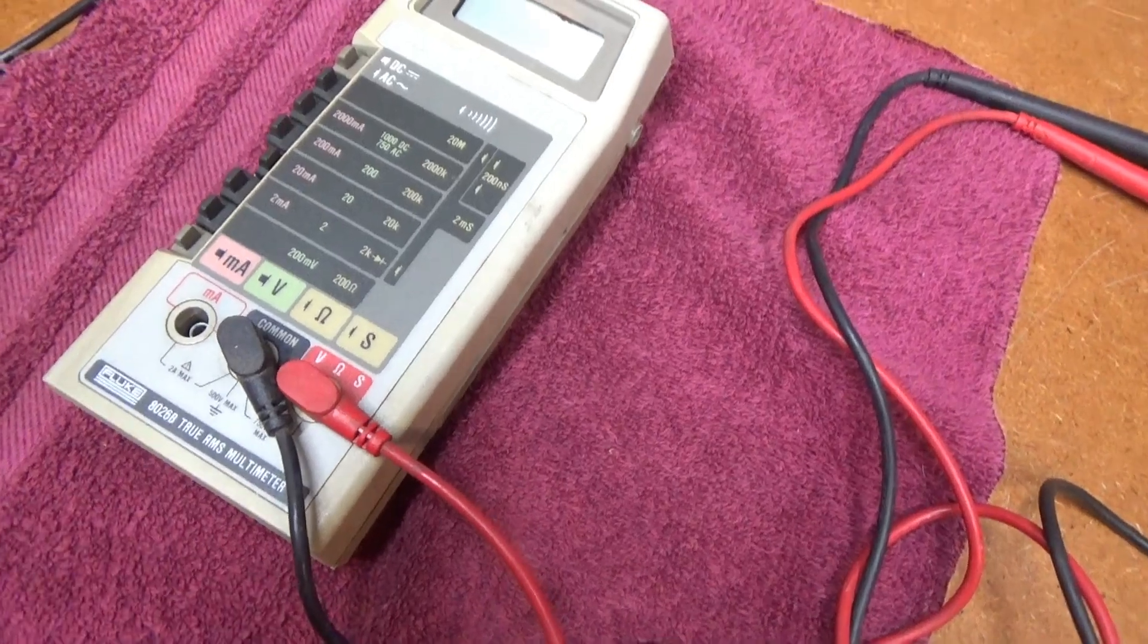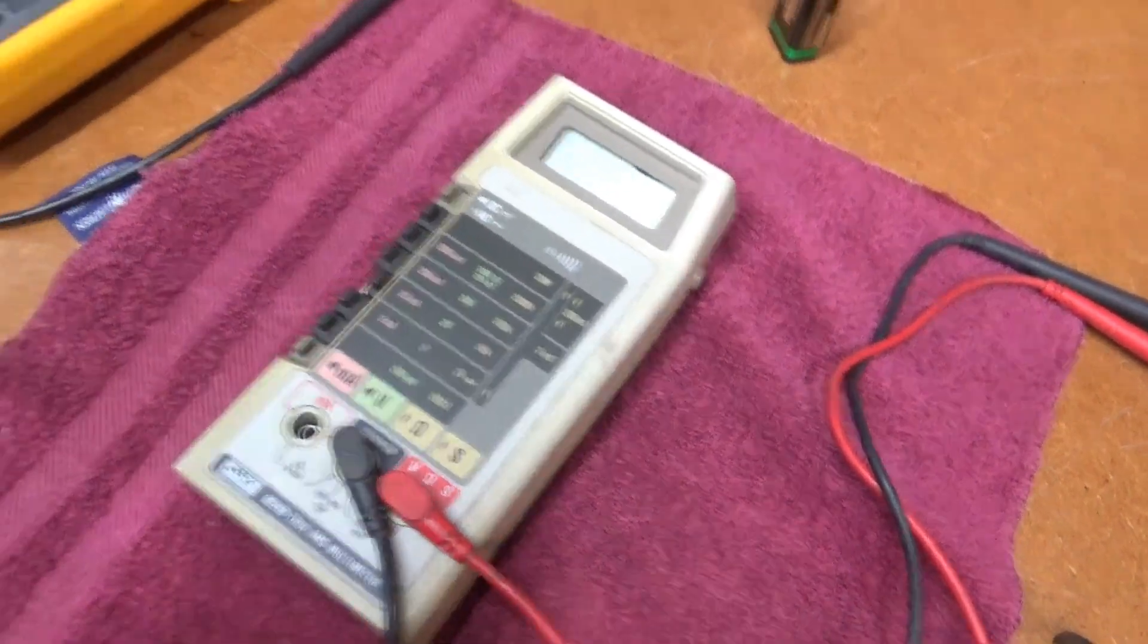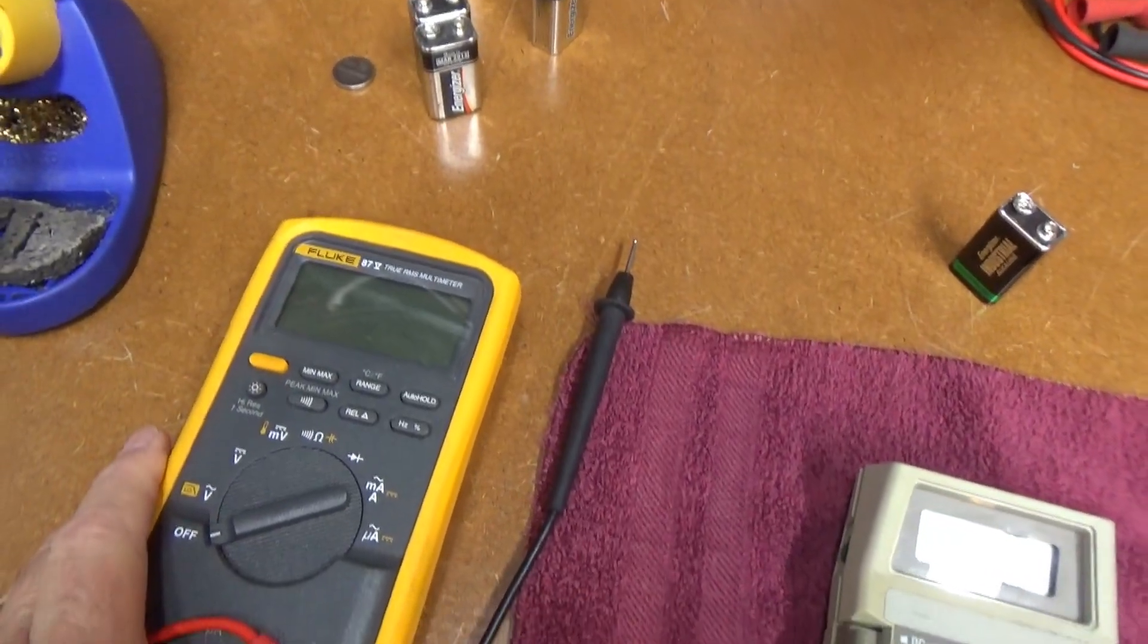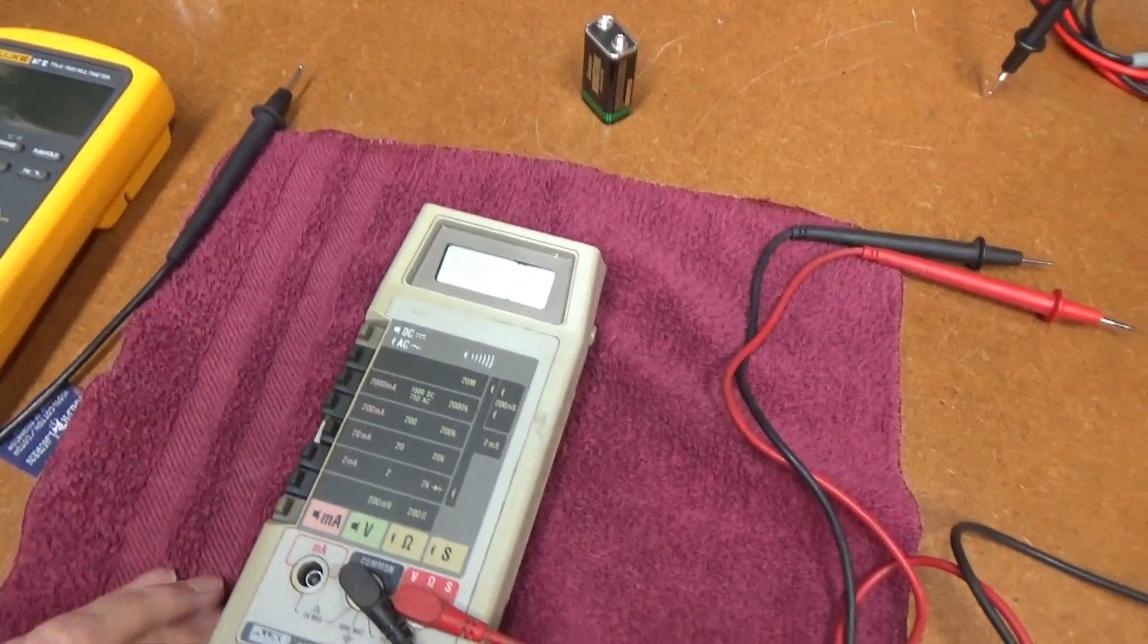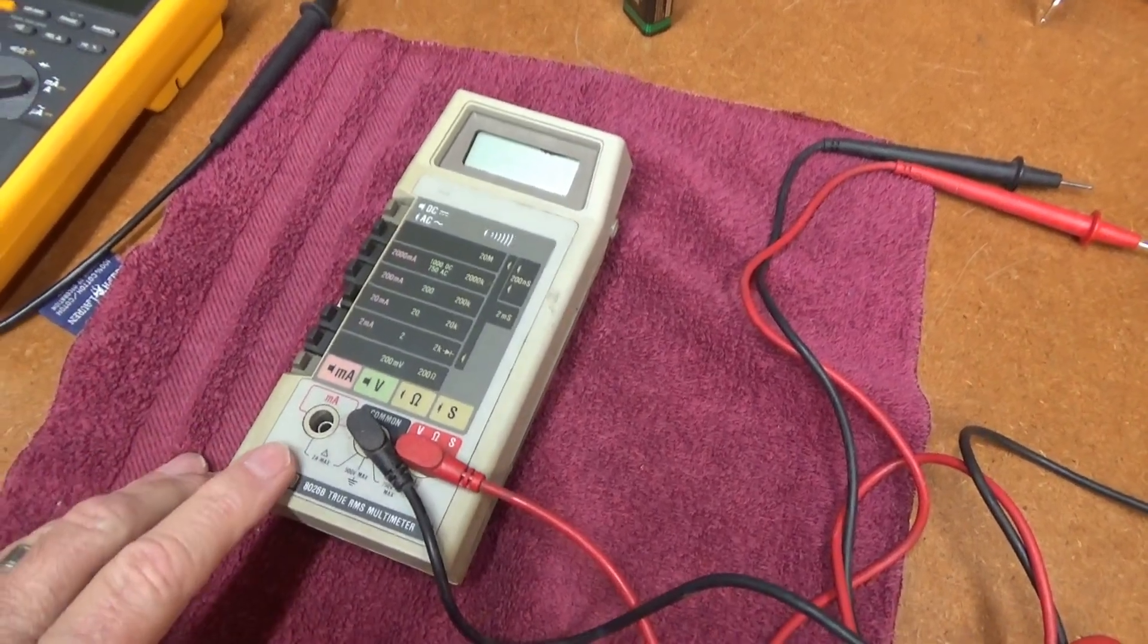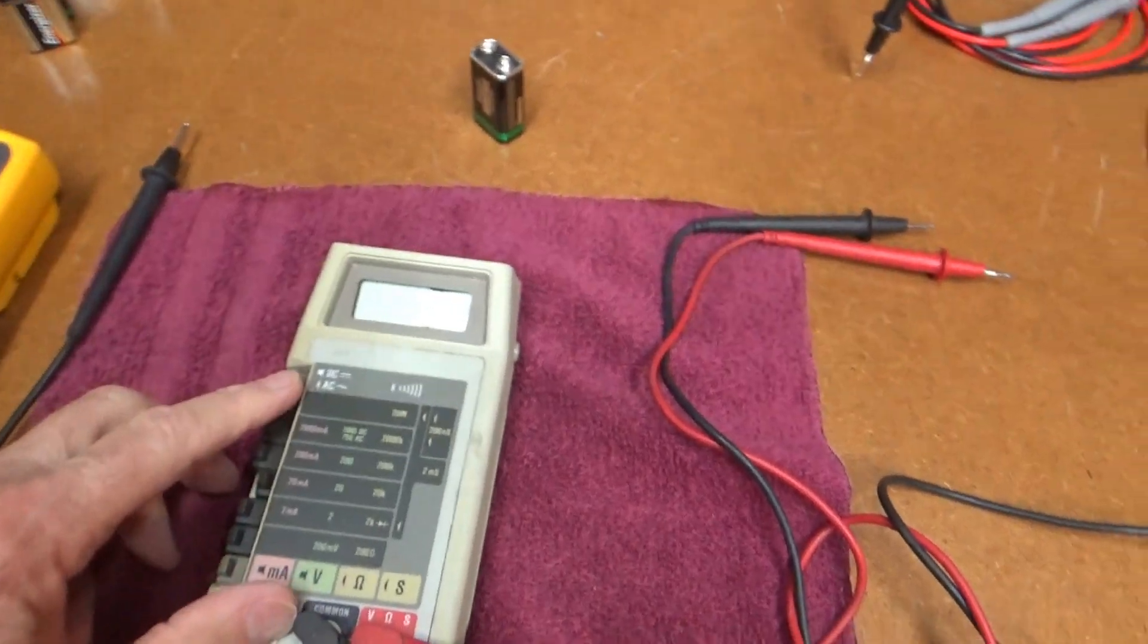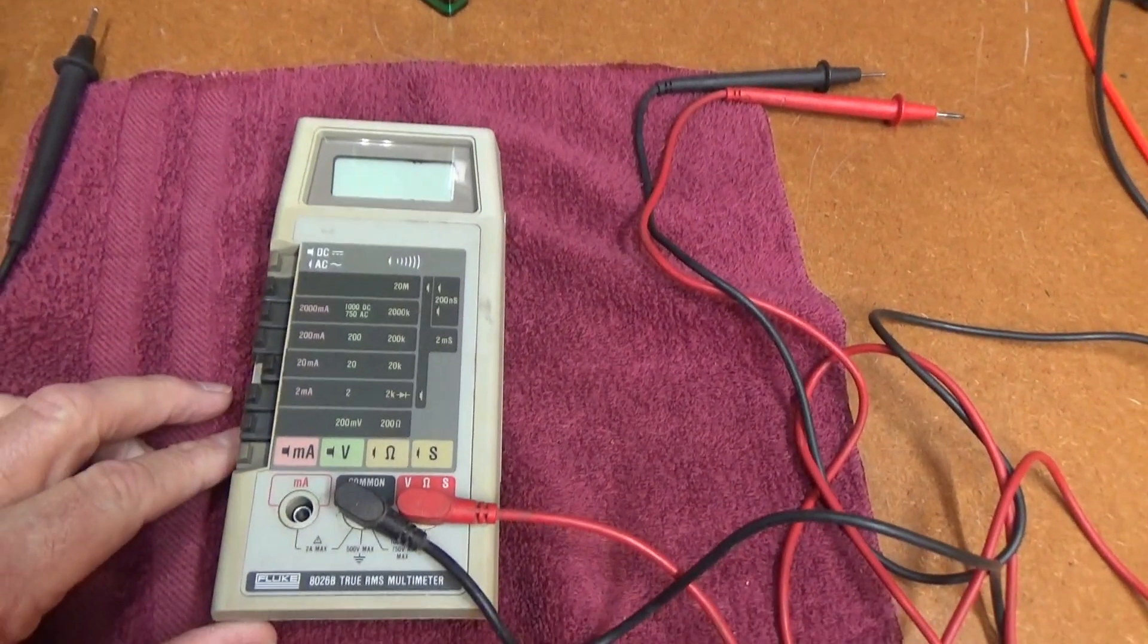I just checked that against, I measured a square wave coming out of my old Tektronix oscilloscope, and it matches the Fluke 87 True RMS meter also. So that part is working and DC is reading perfectly accurate.